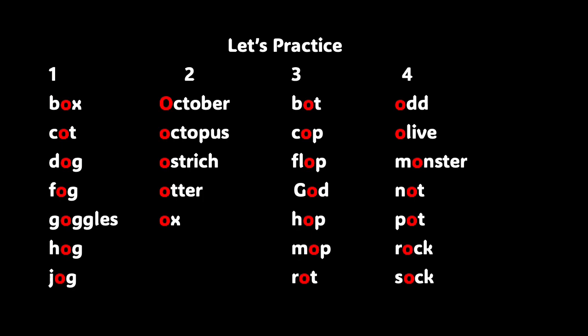Our next list, column three: bot, cop, flop, god, hop, mop, and rot. You are doing a fantastic job. Here's our last column of words before we get into a comprehension activity — column four: odd, olive, monster, not, pot, rock, and sock. Great job! All of the words you see on the screen have the short O sound.